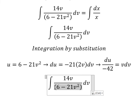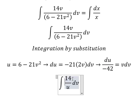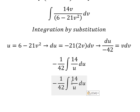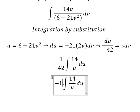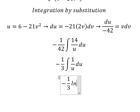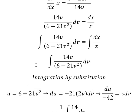We change this expression by u, and v dv we change by this substitution. Number 14 divided by 42 gives us 1 over 3. The integral of this gives us ln of the absolute value of u, and then we add the constant c. Now u is equal to this expression.